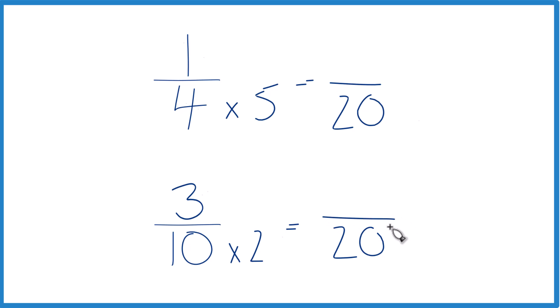So now I have a common denominator, I just need to get the numerators here. Since I multiplied ten times two in the denominator, I need to do that to the numerator as well, because two over two, that's just one. So I don't change the value, just the way we represent it. Three times two is six.